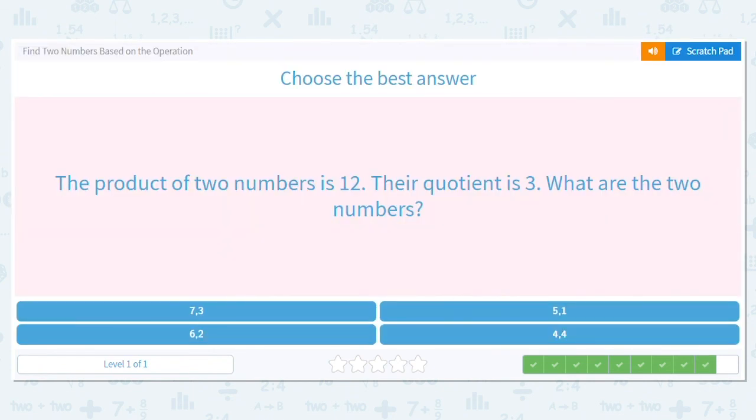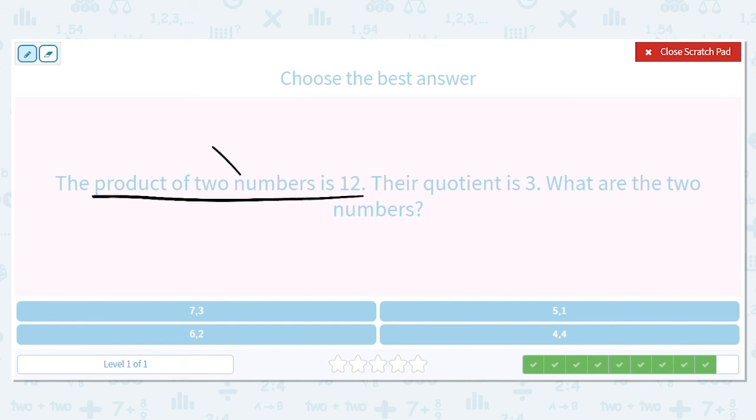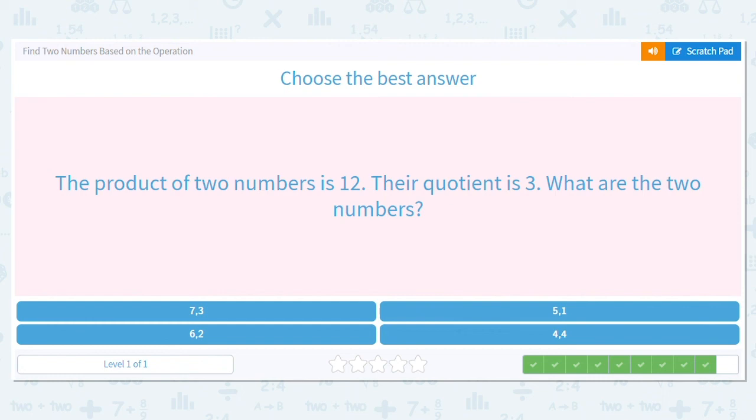Let's do one more. The product of two numbers is 12. Their quotient is 3. So quotient or dividing. Let's look and eliminate down below. Which numbers can I get rid of? I can get rid of 7 and 3, because when I multiply them, that equals 21. I can keep 6 and 2, because 6 times 2 is 12. I can also get rid of 5 and 1, because 5 times 1 is 5. And 4 times 4 equals 16, which means my answer has to be 6 and 2. And watch, 6 divided by 2 does equal 3. So 6 and 2 is my answer.